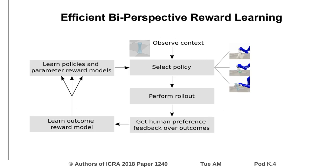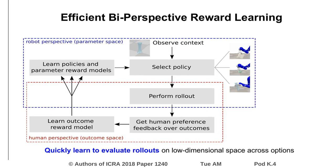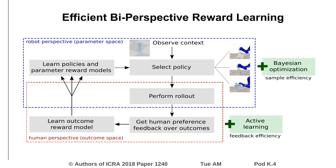From the human view, outcomes compactly summarize rollouts. Because of reduced dimensionality, we quickly learn to evaluate rollouts across different options. However, from the robot view, we need to evaluate and select a policy before the outcome is known. We therefore use the outcome reward model to learn separate parameter reward models for each option.